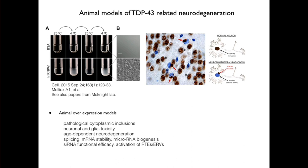In animal models where you increase expression levels of TDP-43, you see pathological cytoplasmic inclusions resulting in toxicity to both glia and neurons. We see age-dependent neurodegenerative effects. People have used these contexts to study potential impacts and found roles for TDP-43 in RNA biology — splicing, mRNA stability, microRNA biogenesis — and as we demonstrated in 2017, impact on siRNA functional efficacy and activation of retrotransposons and endogenous retroviruses.